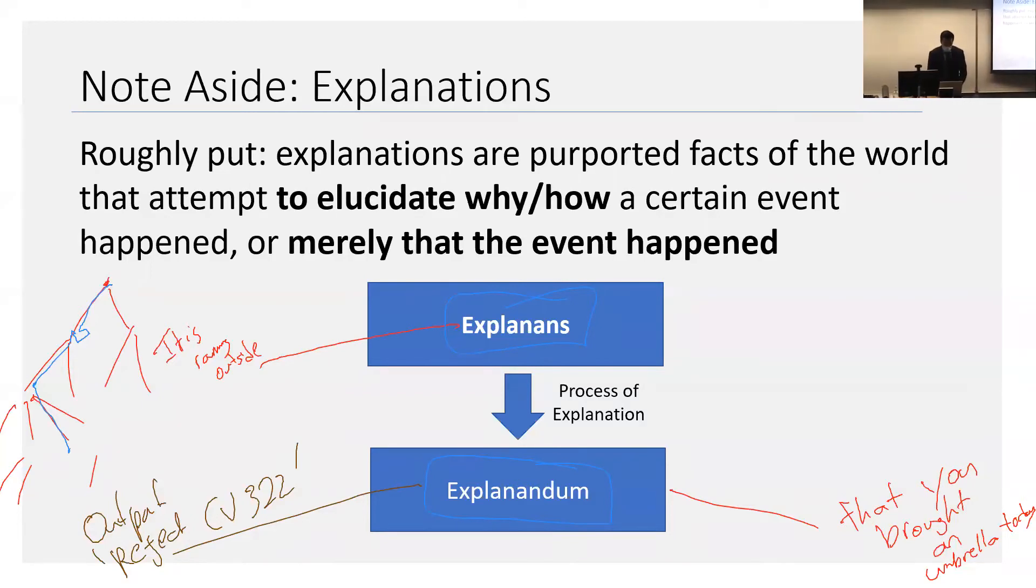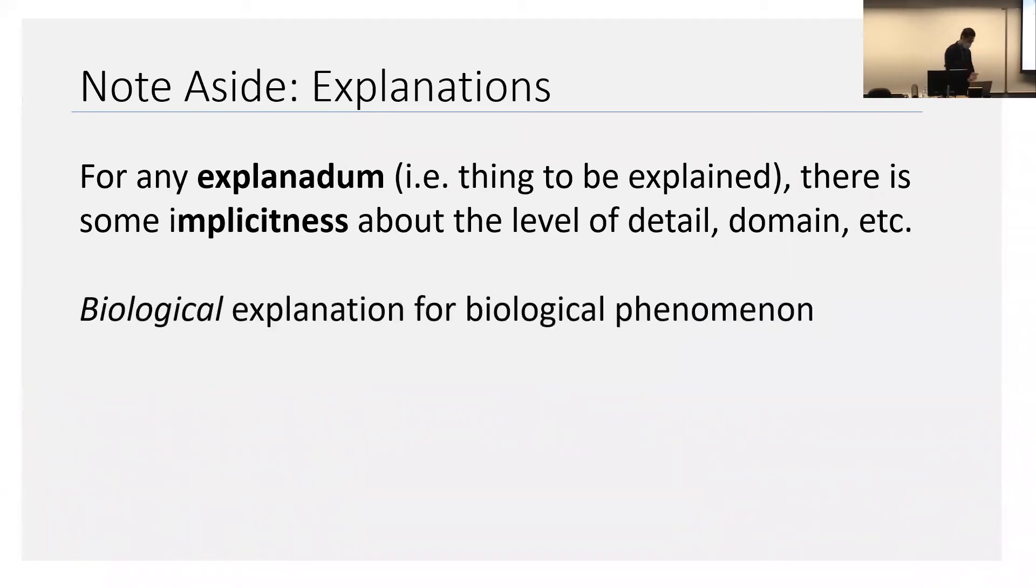Okay, at this point, are there any other questions? So we talked about explanans explaining explanandums. Okay, I think related somewhat to the question is there seems to be some implicitness as to what sort of explanans one is seeking. So suppose you have some explanandum, you know, output reject CV322, there's some explicitness about what kind of explanation you want. Implicitness about the level of detail about the domain. So here's an example. When you have a biological explanandum, you tend to have a biological explanation.